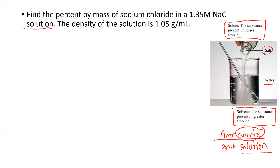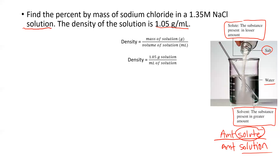When you find the percent by mass of a sodium chloride solution, you need to know percent sodium chloride by mass. I'm given a 1.35 molarity sodium chloride solution, and I'm also given the density of the solution, which is 1.05 grams per mL. We know density is mass over volume. That 1.05 is saying there's 1.05 grams of solution per 1 mL of solution, so that's kind of a concentration — how heavy it is per amount of solution.